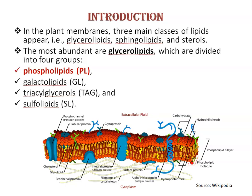Glycerolipids are divided into four groups: phospholipids, glycolipids, galactolipids, and sulfolipids. Phospholipids occur naturally in all living organisms as the major components of cell membrane. You can see here, these are phospholipid molecules present in the cell membrane.